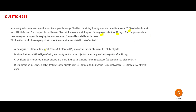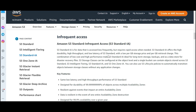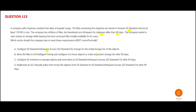Option A is talking about S3 Infrequent Access. Infrequent Access is used when your files are not accessed frequently. But here, the option wants to use it as the initial storage — not after 90 days. Can we use it for the initial storage? We cannot.